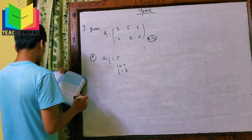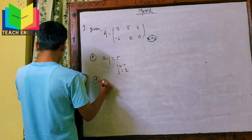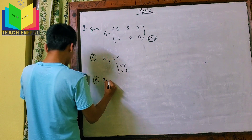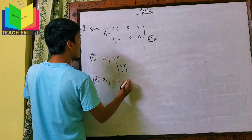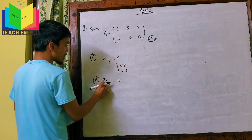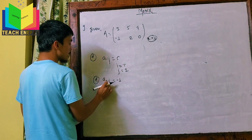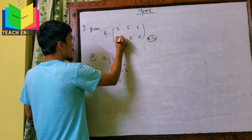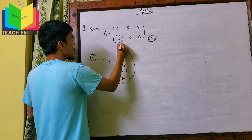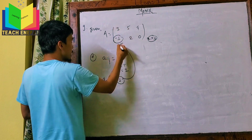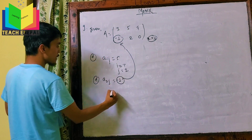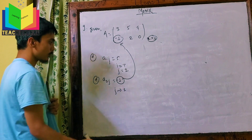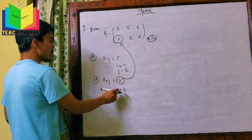Also, the element minus 1 corresponds to the second row. So j is equal to 1 for that element, meaning the second row, first column position gives minus 1.